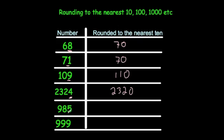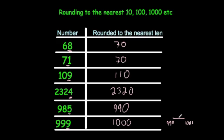985: because it ends in a 5, we round up to 990. And finally 999: because the units is 9, we round up. That makes the tens digit a 10, so the 1 carries over, and the answer is actually 1,000. Because on a number line you would have 990 and 1,000, with 995 in the middle, and 999 is right next to 1,000 — so it rounds up to 1,000 to the nearest 10.